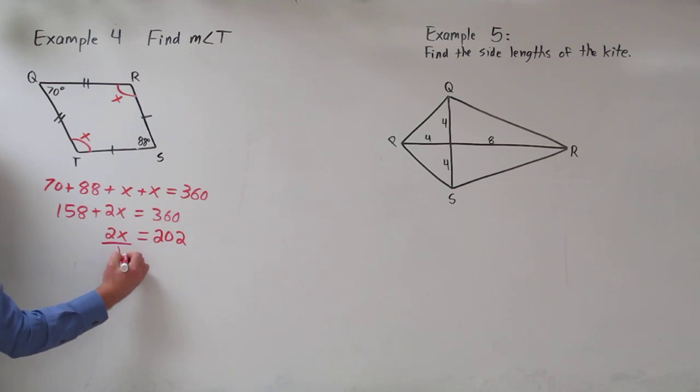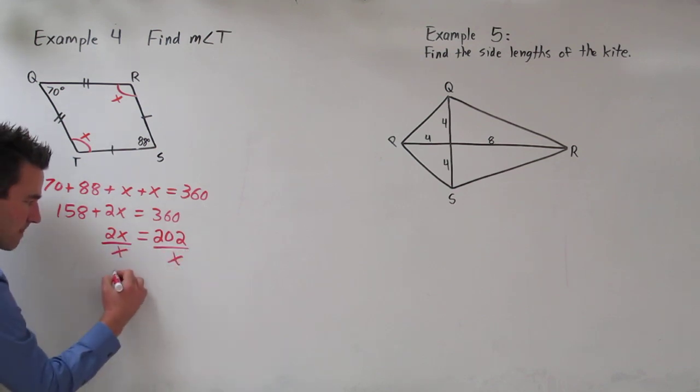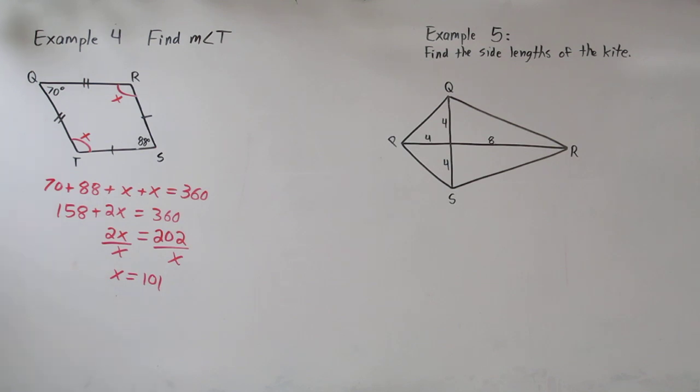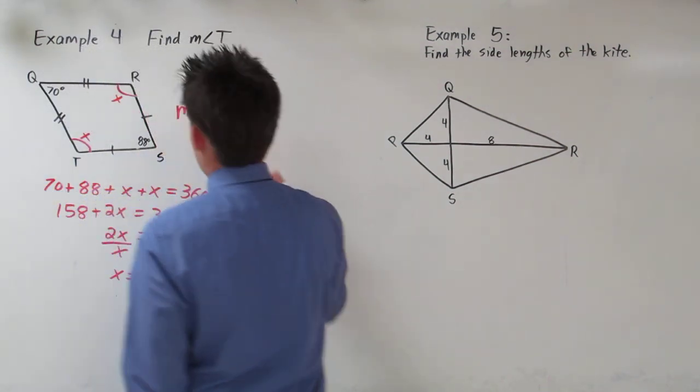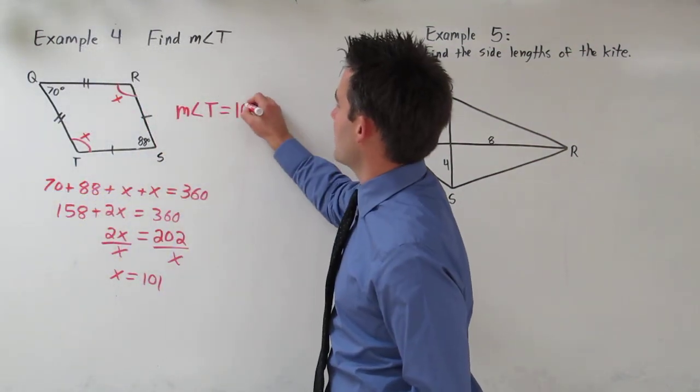Divide both sides by 2. x is 101 degrees. So the measurement of angle t is 101 degrees.